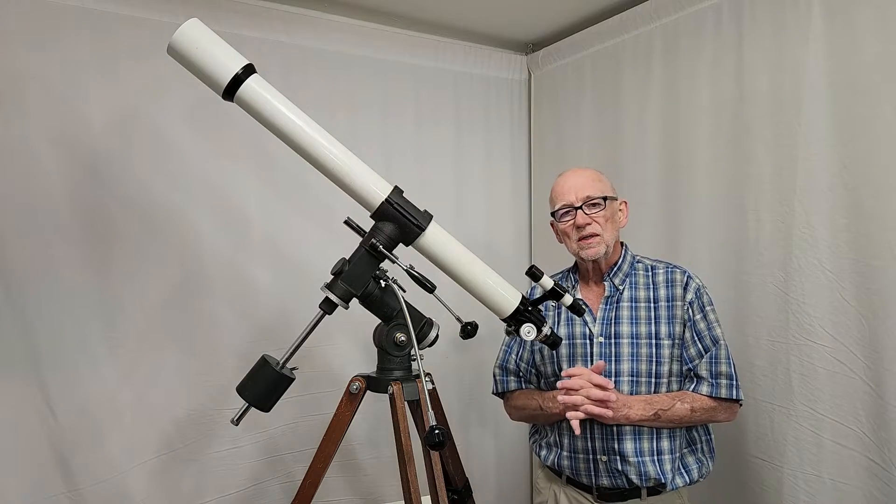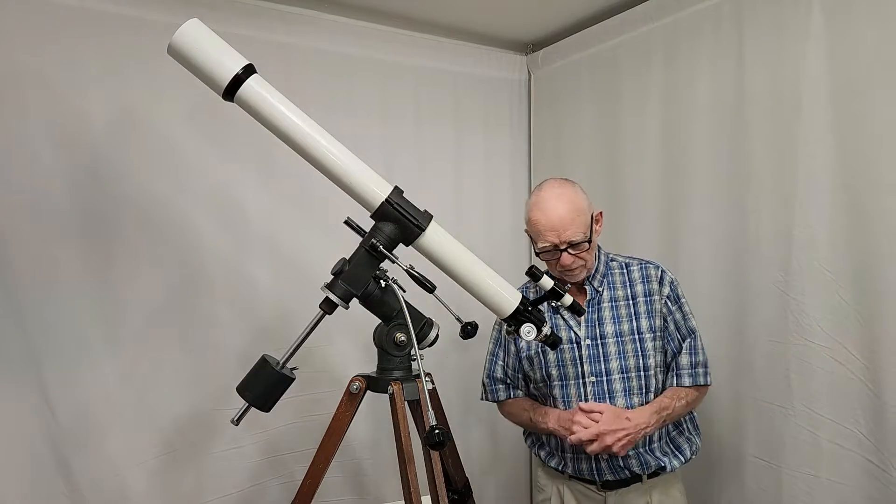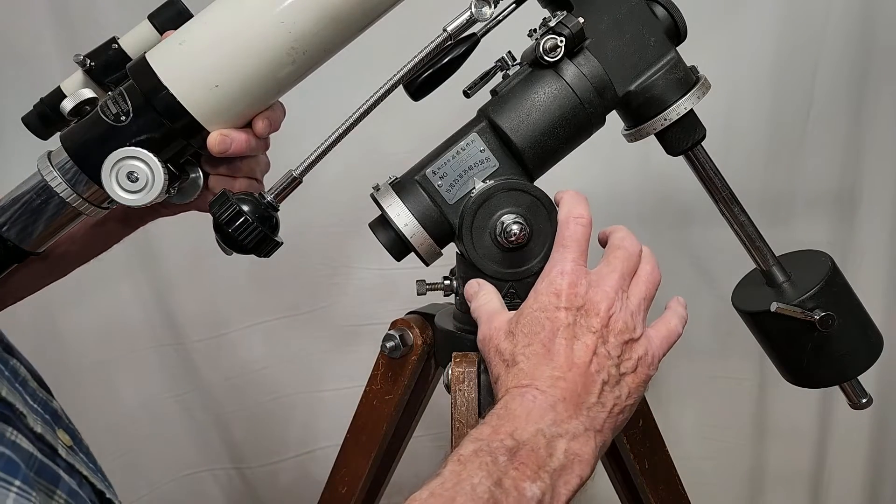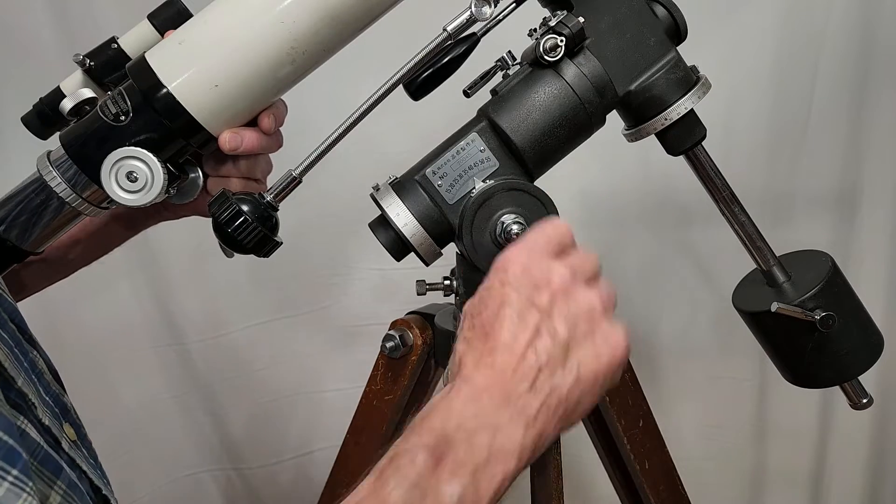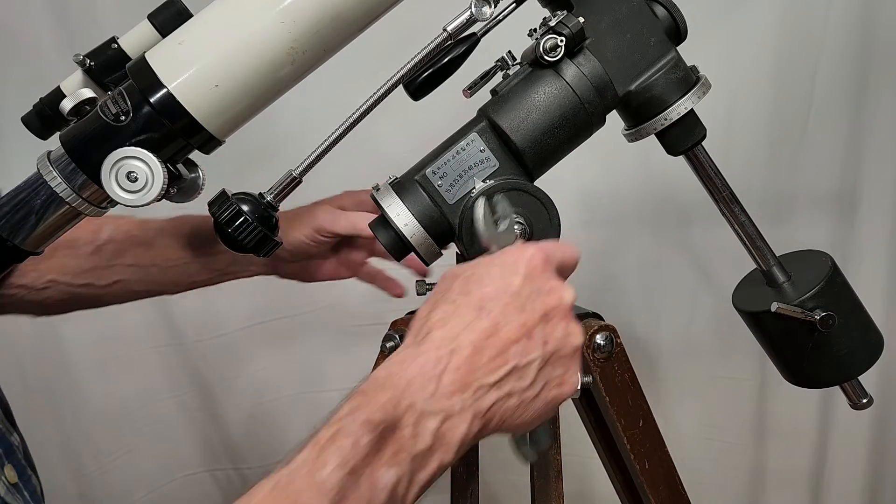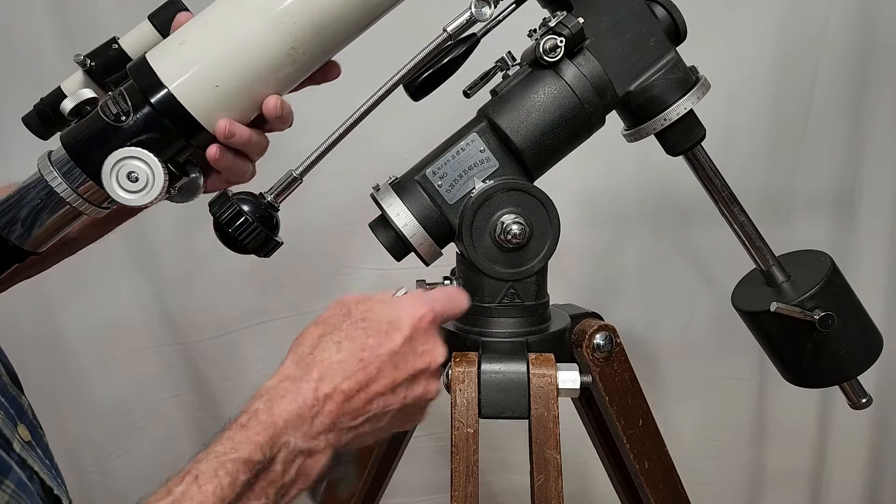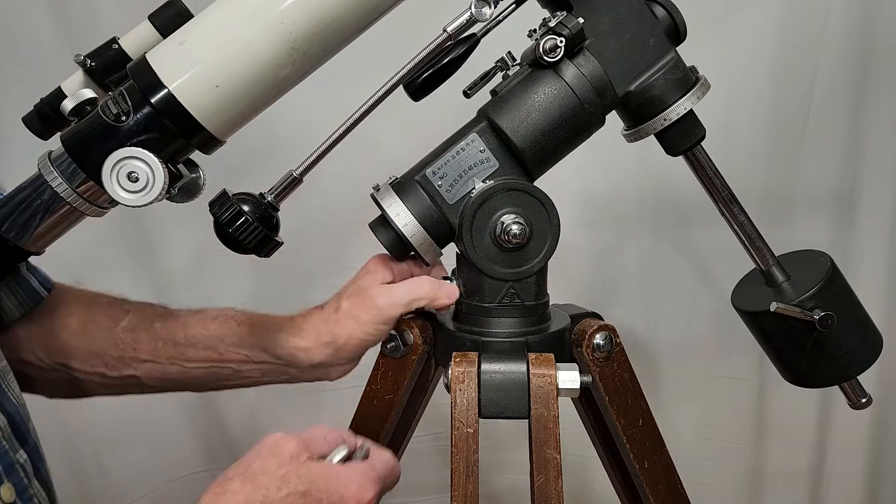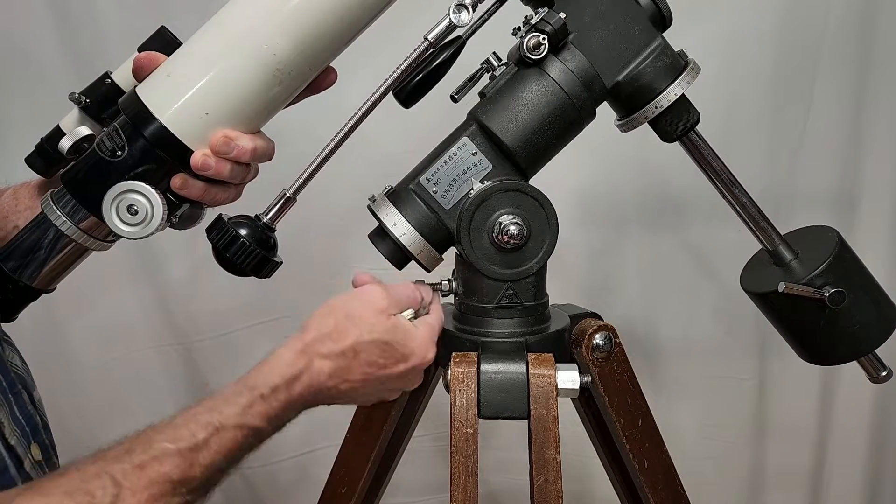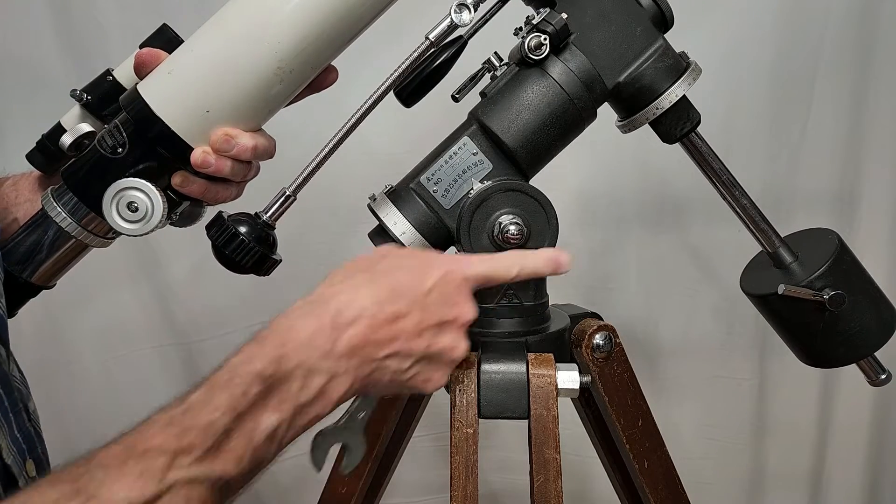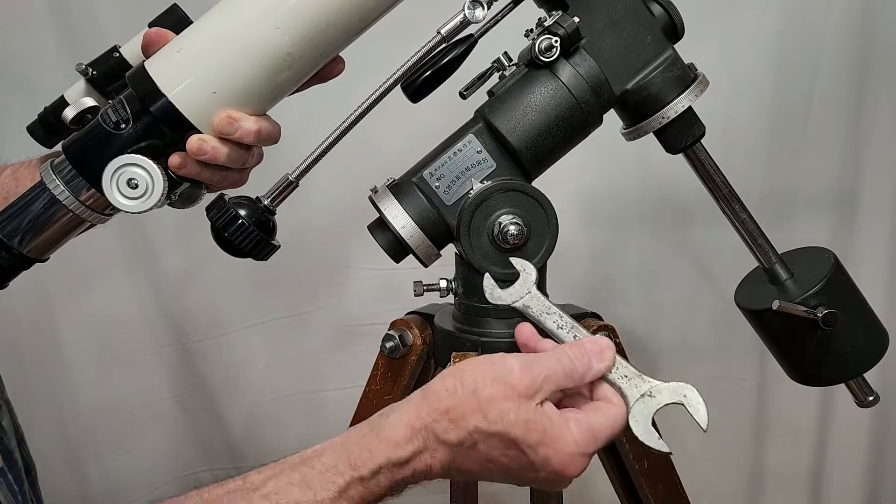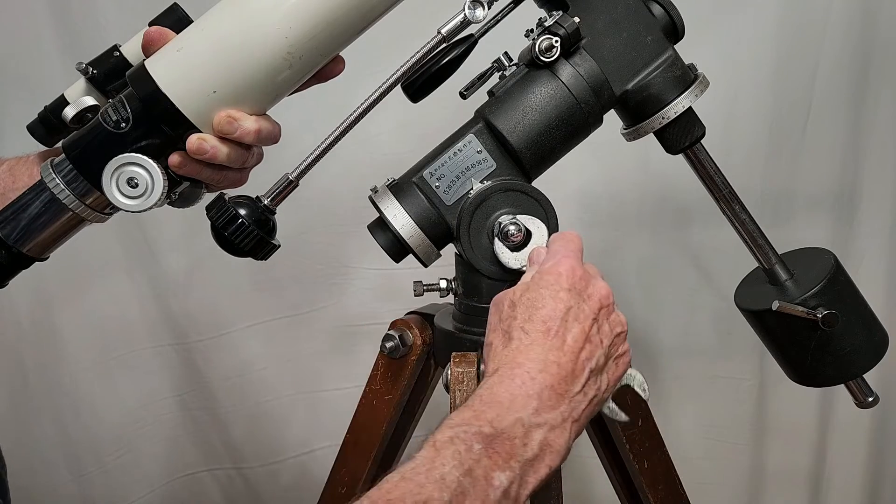So let's have a closer look at this Takahashi TS-65D type. The original TS-65D had a big capstan bolt here and you could loosen that and adjust the altitude that way, but it was not very precise and it was always subject to being in danger of falling down.